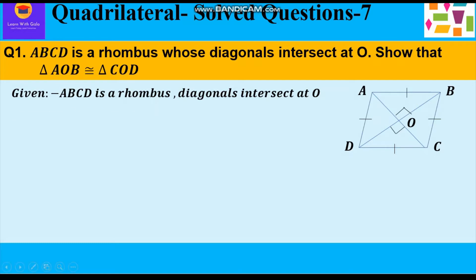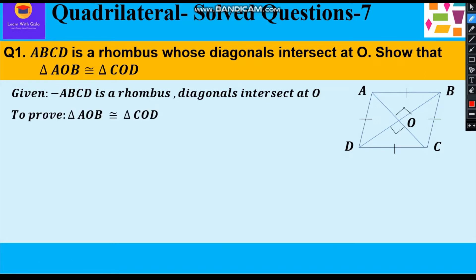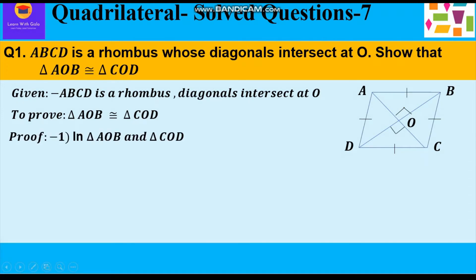As you can see in the given figure. We have to prove that triangle AOB is congruent to triangle COD — basically these opposite triangles are congruent to each other. Now let's start with the proof. In triangle AOB and triangle COD: AO is equal to CO and BO is equal to DO, as diagonals bisect each other.